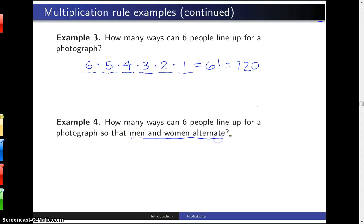This part of the question, namely men and women alternate, implies that there have to be three men and three women in the group because that's the only way you can get men and women to alternate.